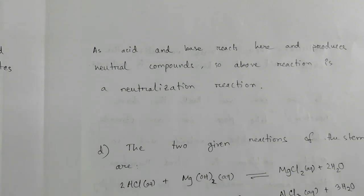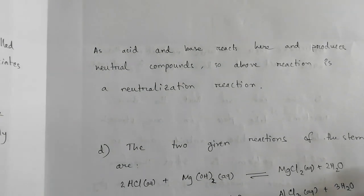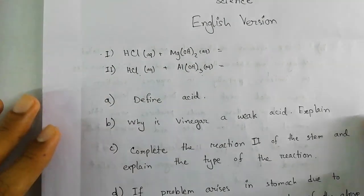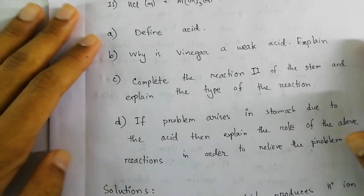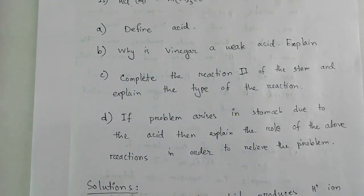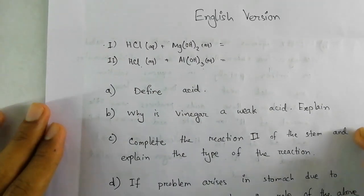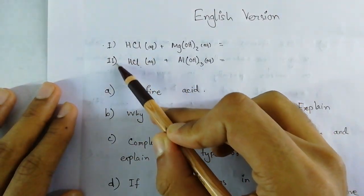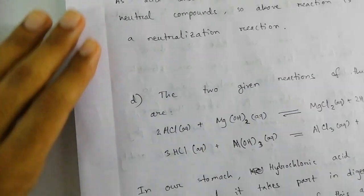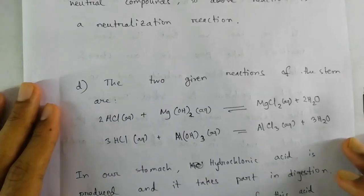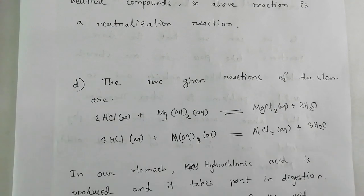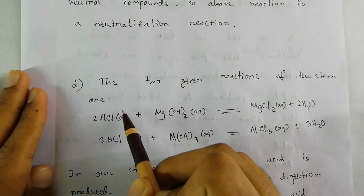You don't necessarily need to copy this model answer — you can take ideas and write in your own way. For the final question, if any problem arises in the stomach due to the acid mentioned in the stem, the acid is HCl (hydrogen chloride). HCl is secreted in our stomach during digestion and is a very important acid for the digestion process.